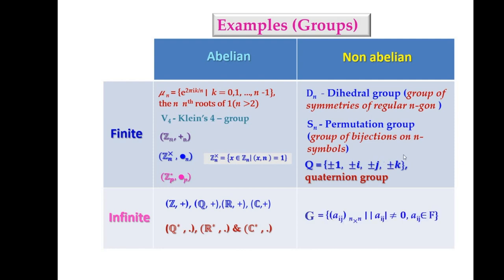And for infinite non-abelian group, we have collection of all matrices of order n cross n with determinant not equal to 0 and entries from a field F.